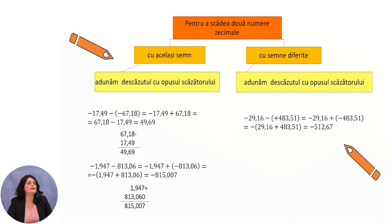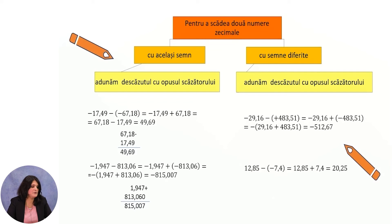Minus 29.16 minus 483.15: by the rule, we add the minuend minus 29.16 with the opposite of the subtrahend, minus 483.51. We now add two numbers with the same sign — they are added and the sign is kept. The result is minus 512.67. In the case of 12.85 minus minus 7.4, we add 12.85 with the opposite of minus 7.4, which is plus 7.45. The answer is 20.25.